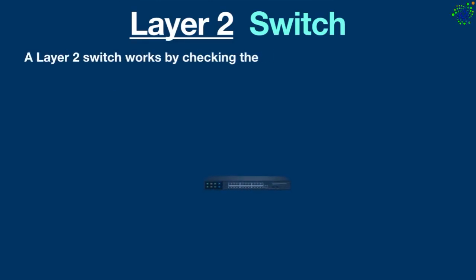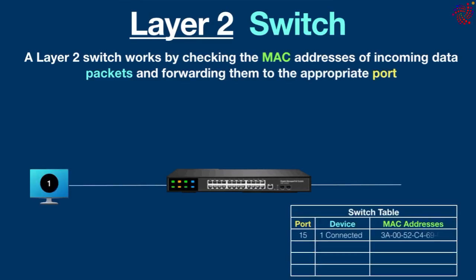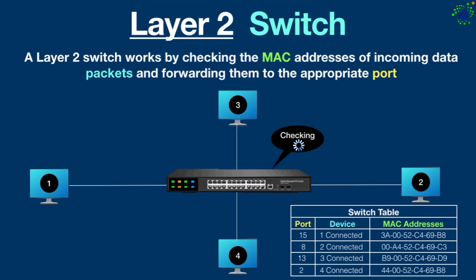A layer 2 switch works by checking the MAC addresses of incoming data packets and forwarding them to the appropriate port. When devices connect to the switch, it stores their MAC addresses in its MAC address table. For example, if device one wants to send data to device two, device one attaches the MAC address of device two to its data packet and sends it to the switch. The switch checks the destination MAC address in its table, determines which port matches, and forwards the packet to the port where device two is connected.